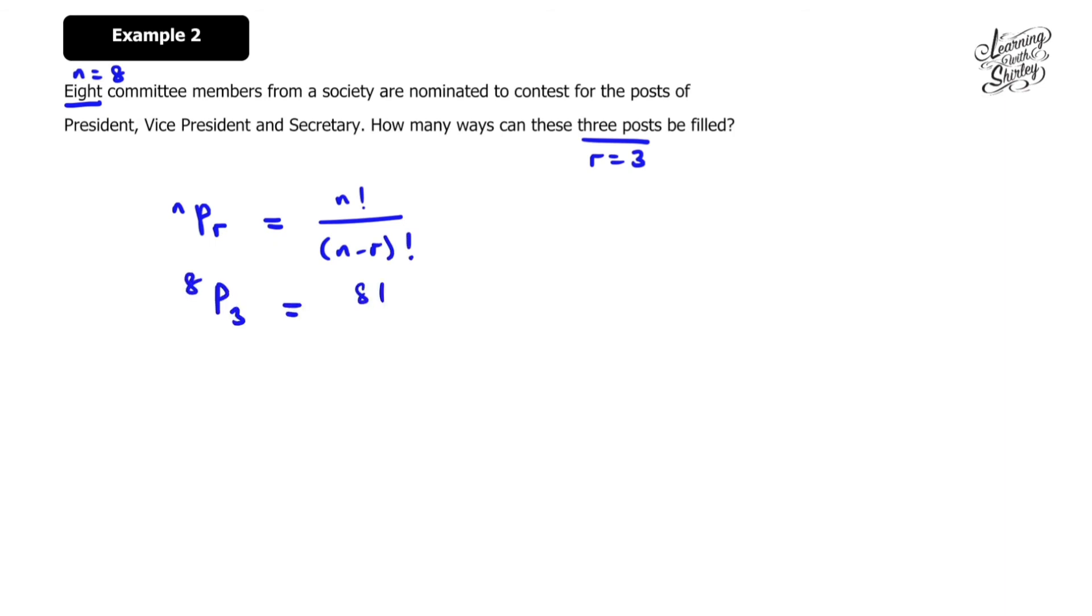8P3 equals 8 factorial over (8 minus 3) factorial, which is 8 factorial over 5 factorial. This equals 8 times 7 times 6 times 5 factorial over 5 factorial, so we can cancel off 5 factorial top and bottom. This equals 8 times 7 times 6, which equals 336. That's the answer.